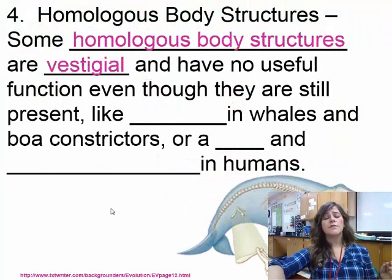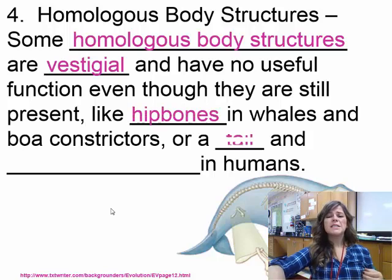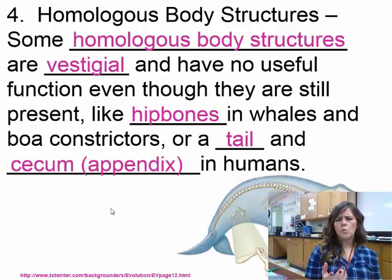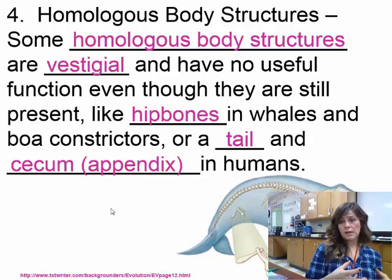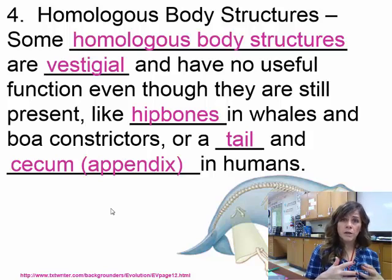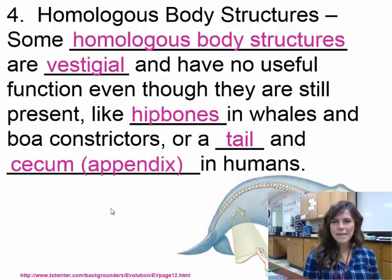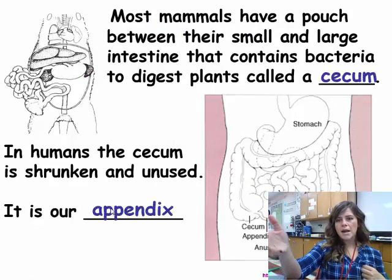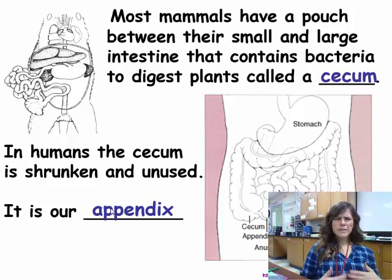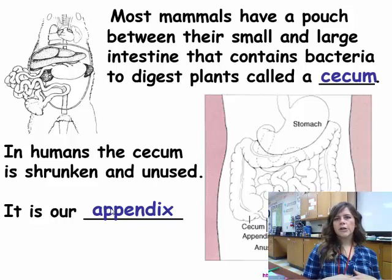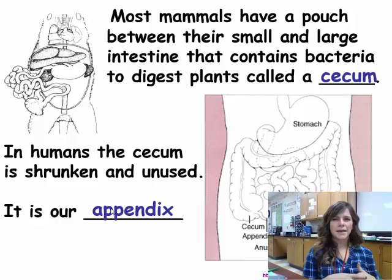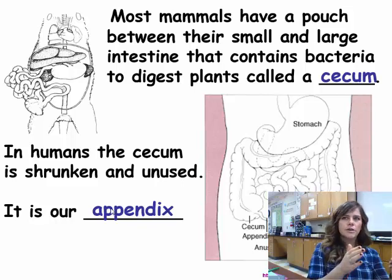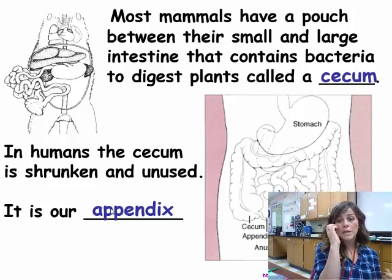Some homologous structures are vestigial, meaning they aren't used anymore but haven't gone away. The hip bone in a whale - why hasn't it gone away? Because it's not chosen for or against. It doesn't help or hurt the whale, so that hip bone remains. The same goes for the human appendix: it's not good or bad, not chosen for or against, and that's why we still have appendixes. Gradually over time our appendix has gotten smaller, whereas the appendix in a rat is still relatively large based on what they eat.